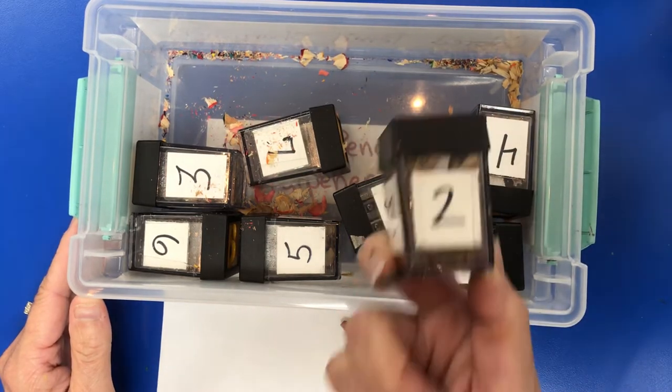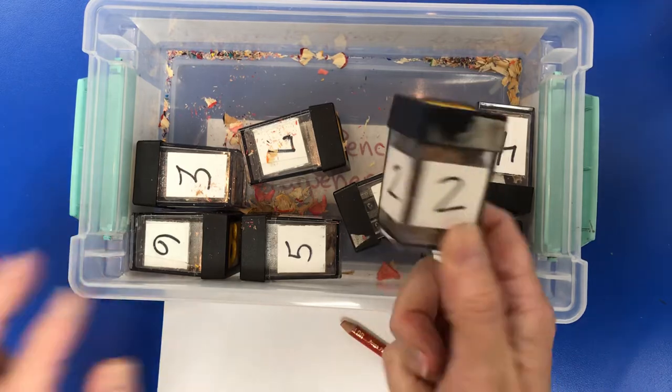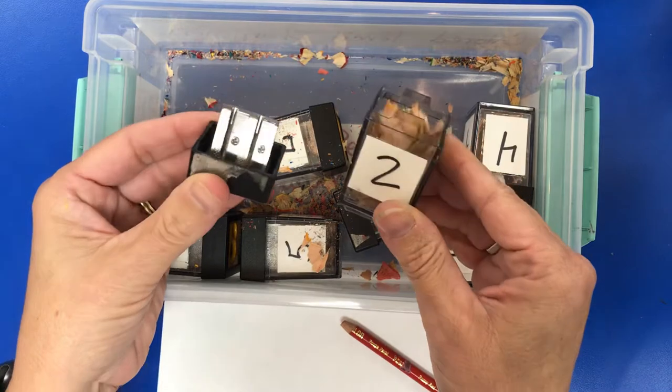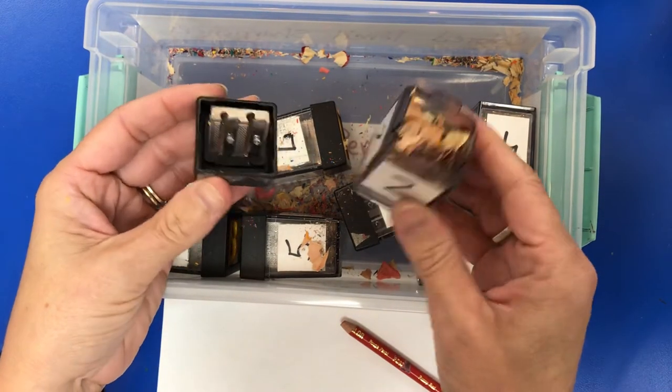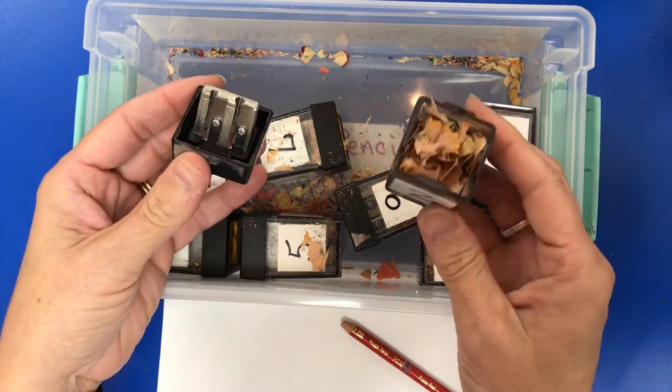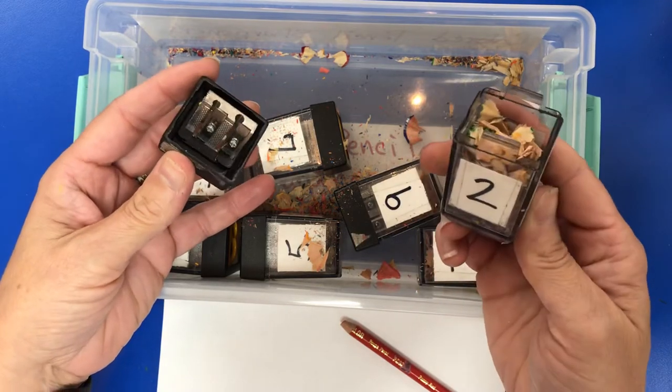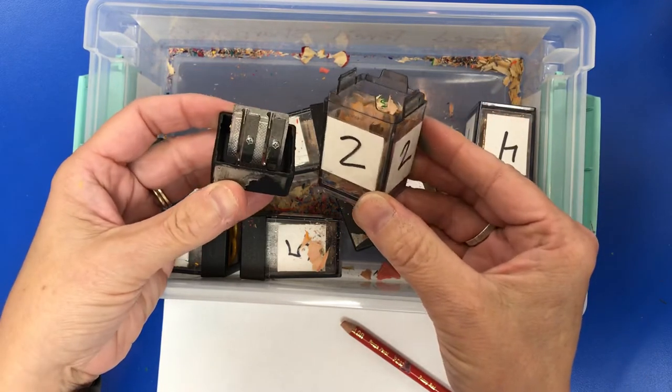One thing that did not happen today that should be happening is when your table is done with a sharpener, you should be emptying it out. I'm pretty sure that if you're coming in the classroom and grabbing your sharpener, it's kind of a hassle to realize that the person ahead of you didn't do their job.